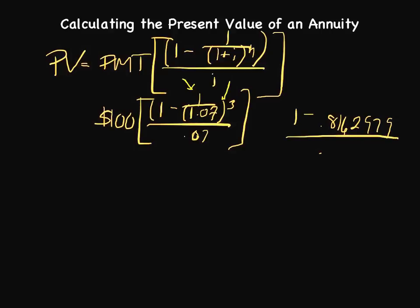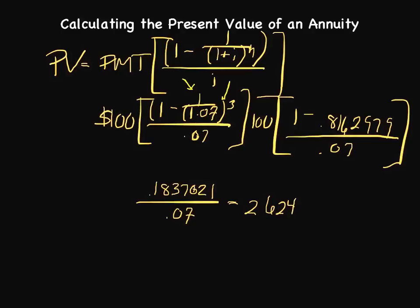Then we have to take one minus that number and ultimately divide that by our interest rate, and that is still going to get multiplied by our payment of 100. So 1 minus 0.8162975 is actually 0.1837021. Then we still have to divide that by 0.07, and that equals 2.6243157.